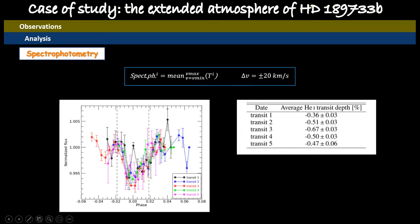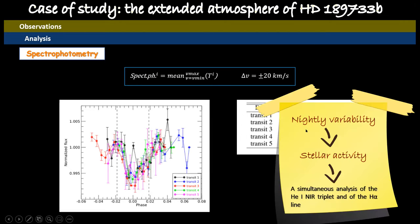Because, for example, there is a night with an excess in-transit helium absorption and another night with a minor absorption. And this nightly variability could be due to stellar activity.